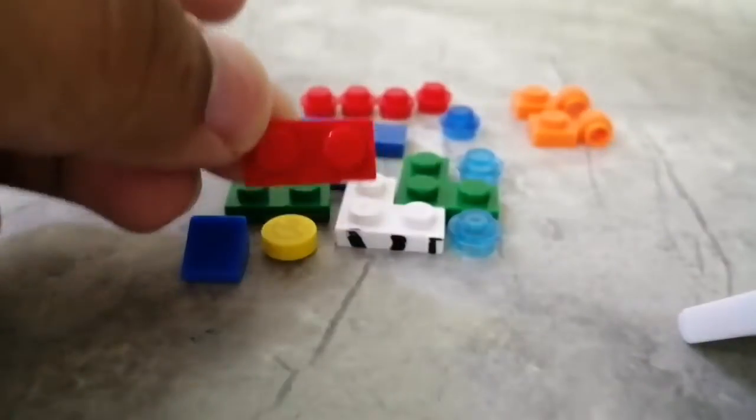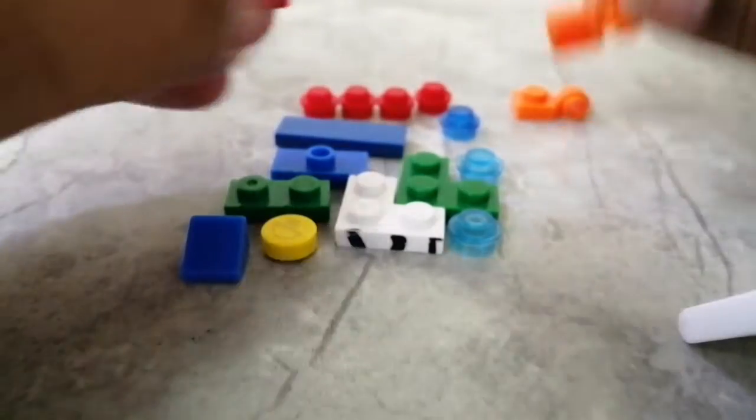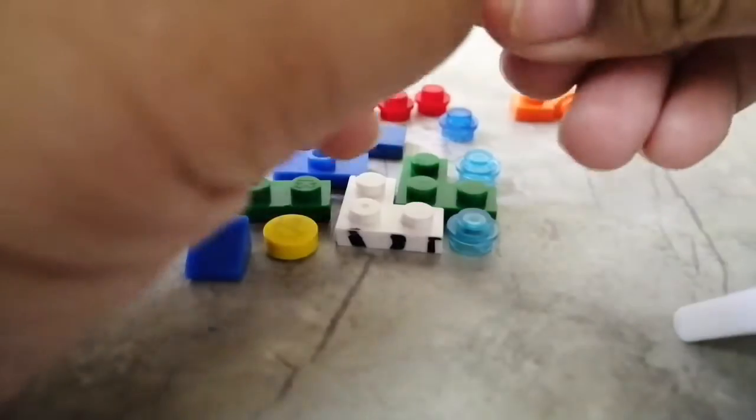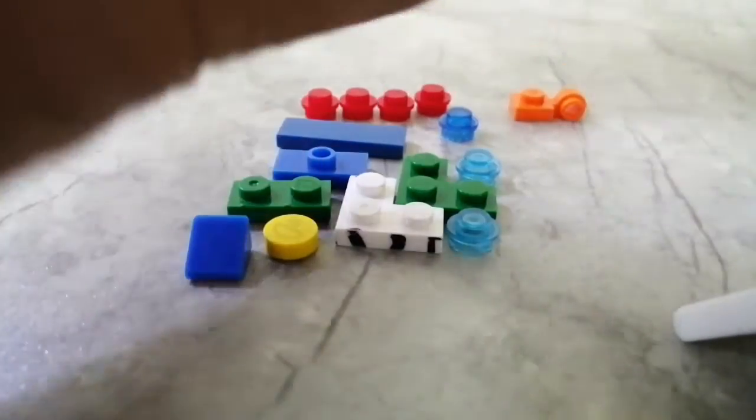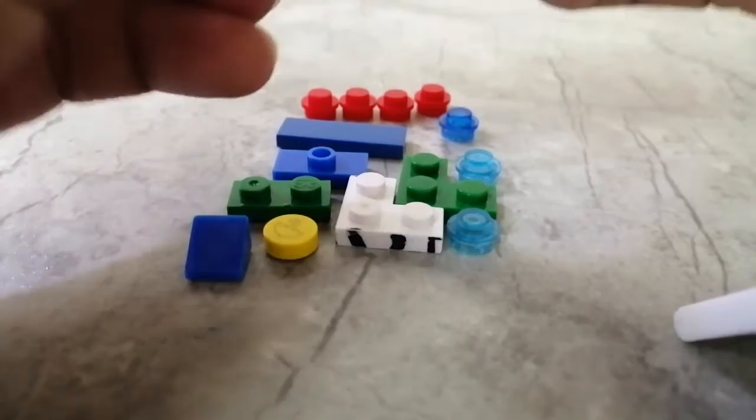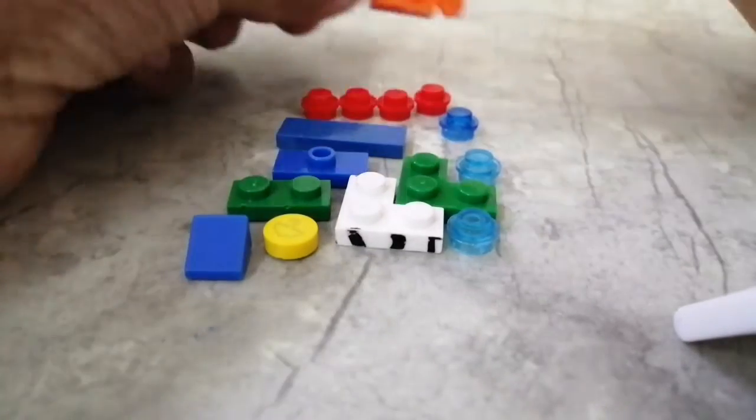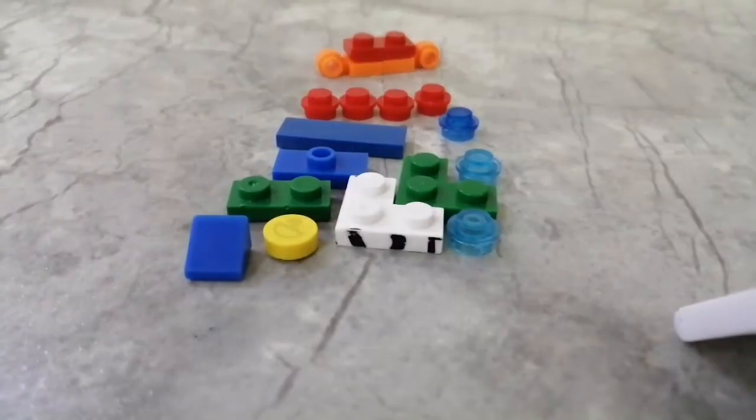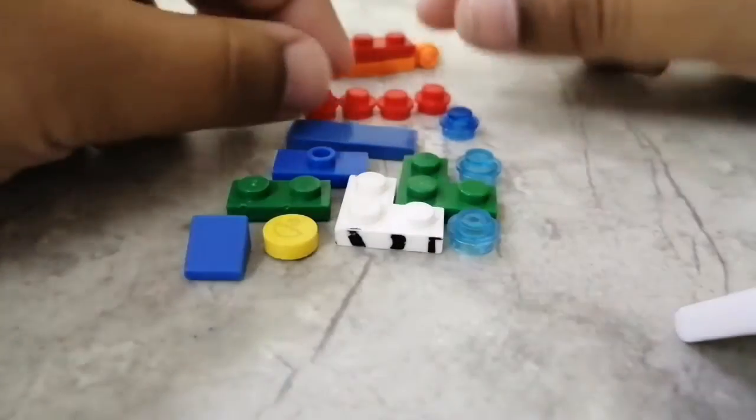The first piece you're gonna need is a 2x2 red plate, then two of one of these pieces, then another two of one of these pieces. So let's make the wheel.